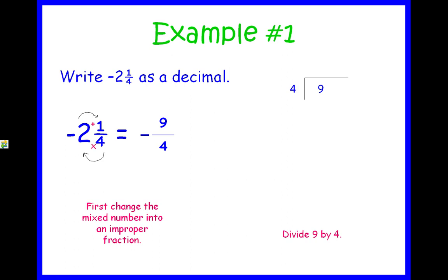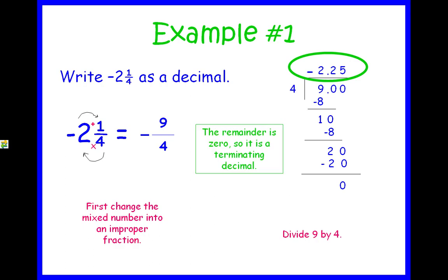Four goes into nine two times. Four times two is eight. We subtract and get one. Now we have no more numbers to bring down, so we have to add a decimal zero. Decimal goes straight up and bring that zero down. Four goes into ten two times as well. Four times two is eight. When we subtract, we get two. Add a zero, bring it down. Four goes into twenty five times. Four times five is twenty, and we get a remainder of zero. So our answer is negative 2.25. That is the decimal form of negative two and one-fourth. The remainder is zero, so this is considered a terminating decimal. It ends.